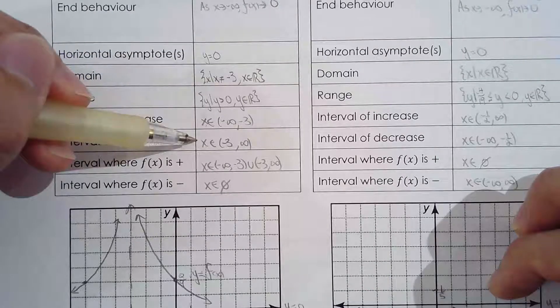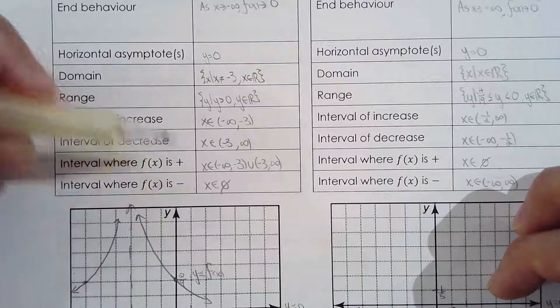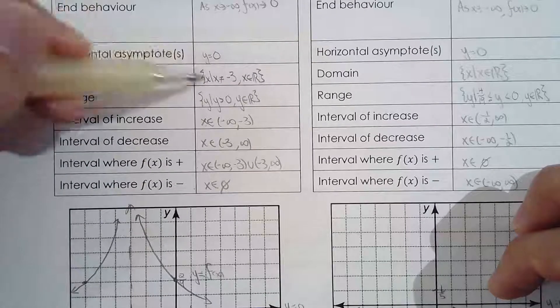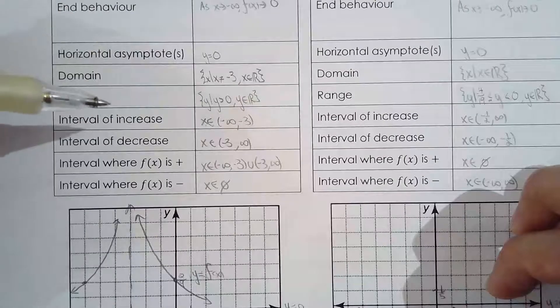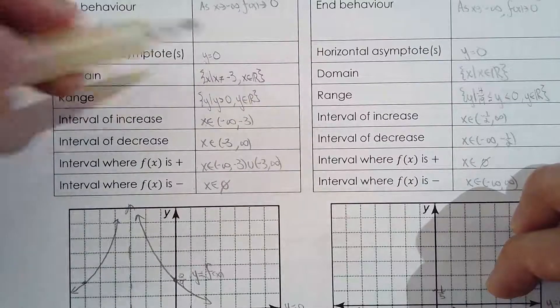I can use the graph to generate domain, range, increase, decrease, where it's positive, where it's negative. One more time, the horizontal asymptote is always y equals zero if you're talking about the reciprocal of a quadratic function. But later on see it's not always the case.